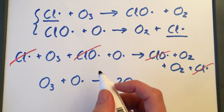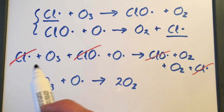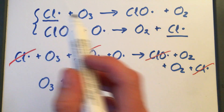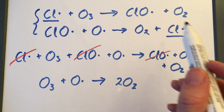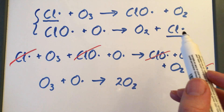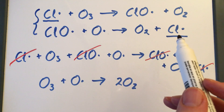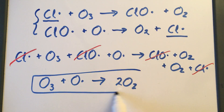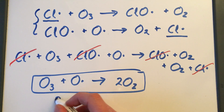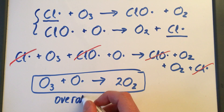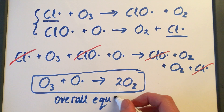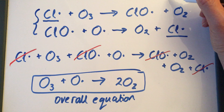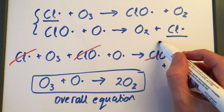That reaction is being catalysed by chlorine because chlorine is involved in the first stage and produced again in the second stage — so it's not used up and it doesn't appear in the overall reaction equation. This is the overall equation, and the two individual reactions are the stages in the mechanism.